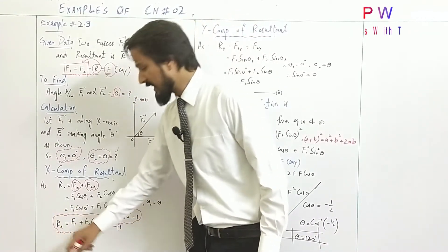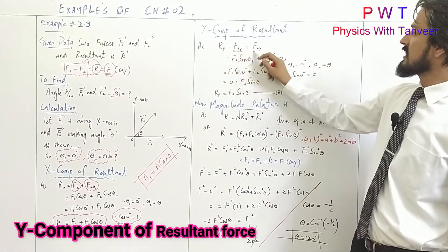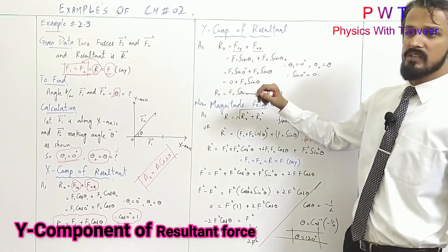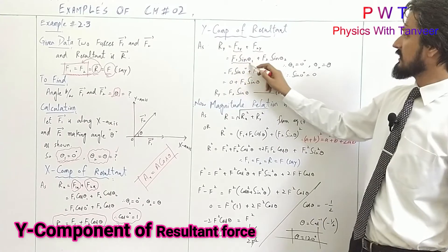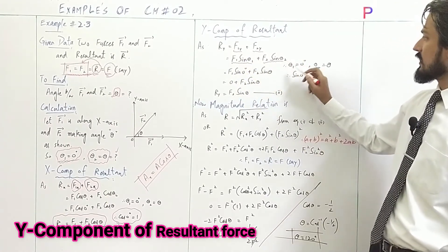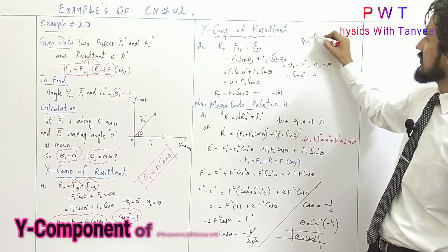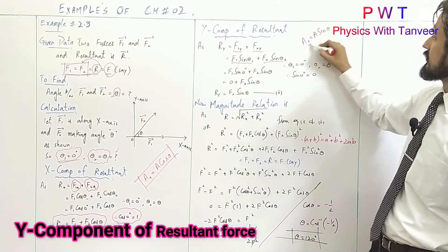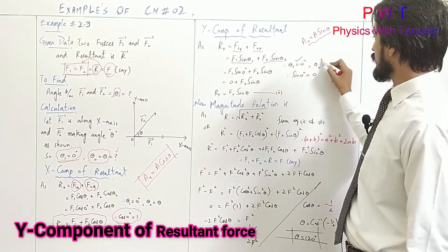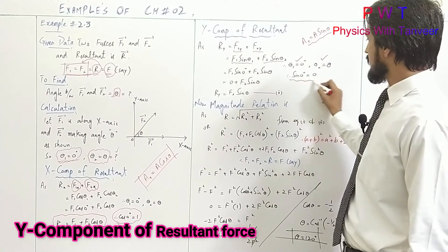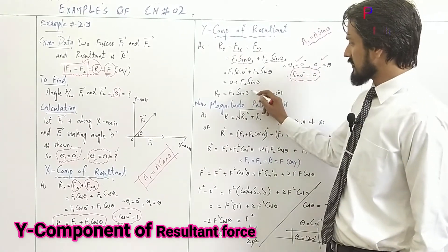Now we have the y-component. F1Y plus F2Y. F1Y is F1 sin theta1, F2Y is F2 sin theta2, because the y-component Ay equals A sin theta. Theta1 is 0 degree, theta2 is theta. Sin 0 is 0, so we have the resultant y-component as F2 sin theta.